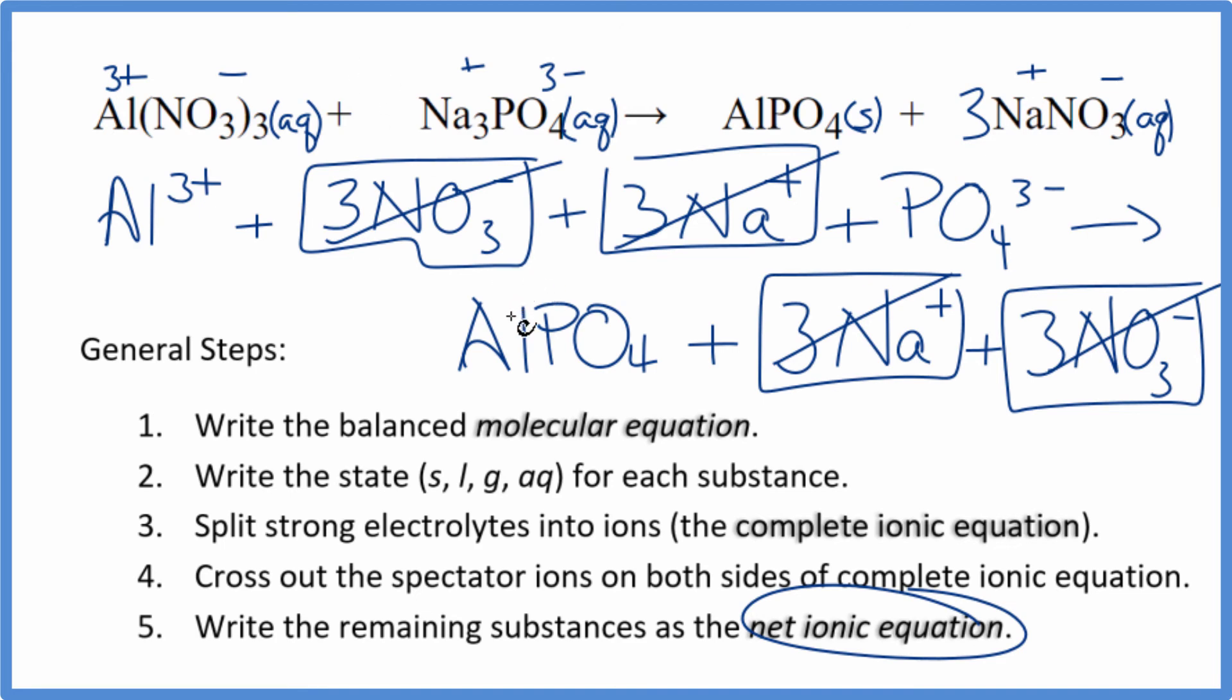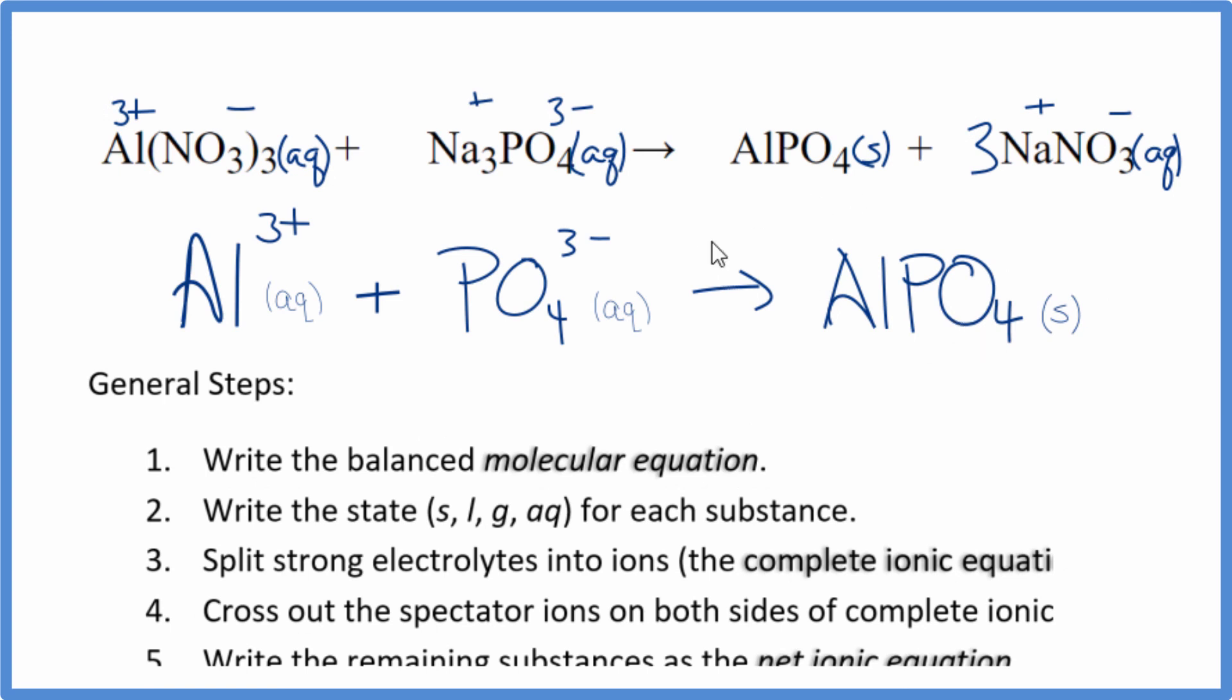I'll clean this up and write the states. We'll have our net ionic equation. So this is the balanced net ionic equation for Al(NO3)3 plus Na3PO4. You'll note first that charge is balanced. We have a three plus and a three minus. That adds up to zero. Net charge of zero on this side. This is a neutral compound, net charge of zero as well. So the charge is balanced, and if you count the atoms up, they're balanced as well.